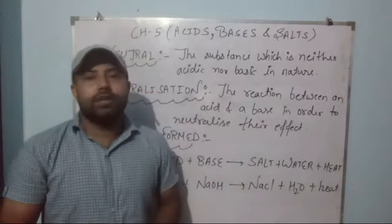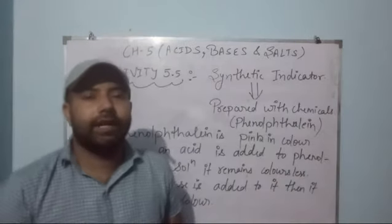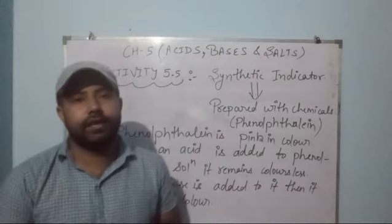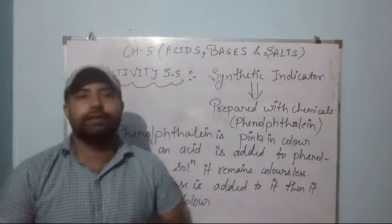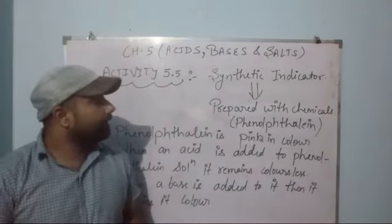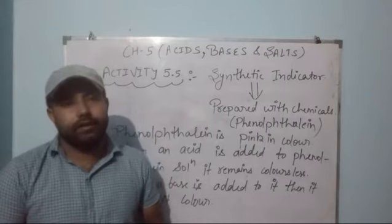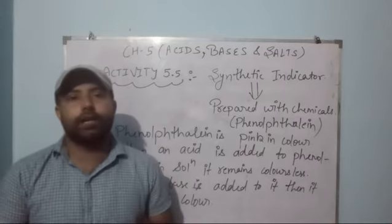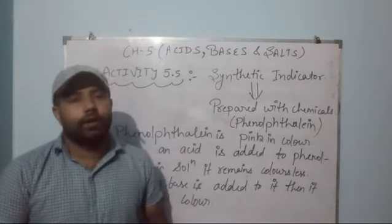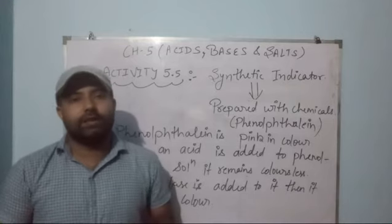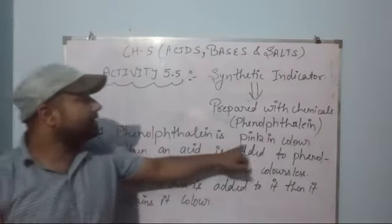Now we are going to discuss how we can check whether neutralization has happened or not. In activity 5.5, we are going to use a synthetic indicator called naphthalene. Synthetic indicators are those prepared in labs and can be used to determine the acidity or basicity of a solution. The first point about naphthalene is that it is pink in color.